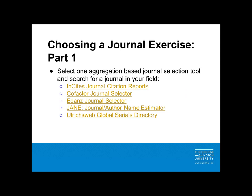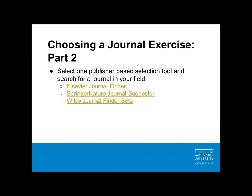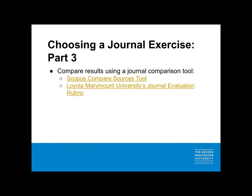Now that we've reviewed some of the most common journal selection tools, I'd like to give you the opportunity to use these resources on your own. For the first exercise, please refer to the list of aggregation-based selection tools in your Journal Selection Tools Links PDF, select one tool, and search for a journal in your field. For the next exercise, select one publisher-based journal selection tool from your PDF and look for a journal in your field. For the final exercise, select one comparative tool or rubric and compare two journals in your field. Lastly, complete the related quiz to document your findings.